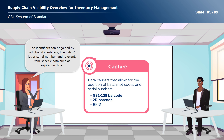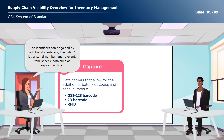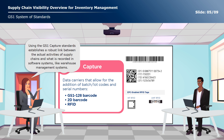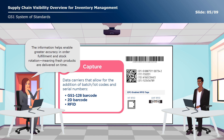The identifiers can be joined by additional identifiers like batch, lot, or serial number, and relevant item-specific data such as expiration date. Using the GS1 capture standards establishes a robust link between the actual activities of supply chains and what is recorded in software systems like warehouse management systems. This information helps enable greater accuracy in order fulfillment and stock rotation, meaning fresh products are delivered on time.